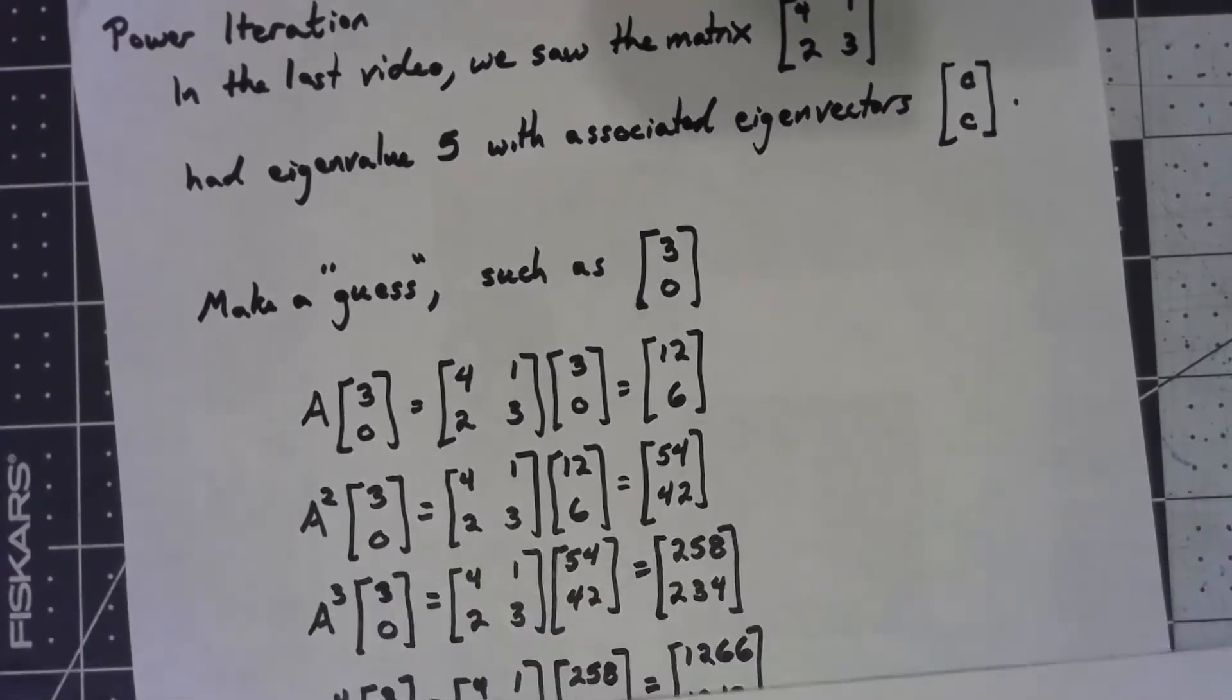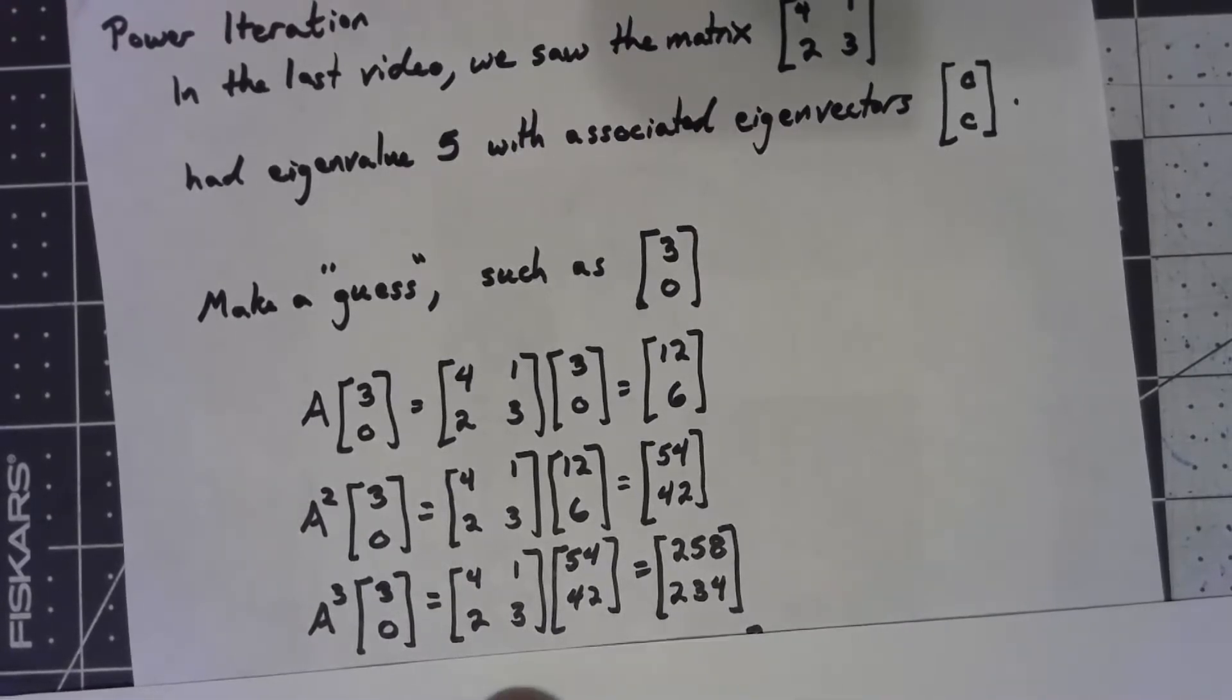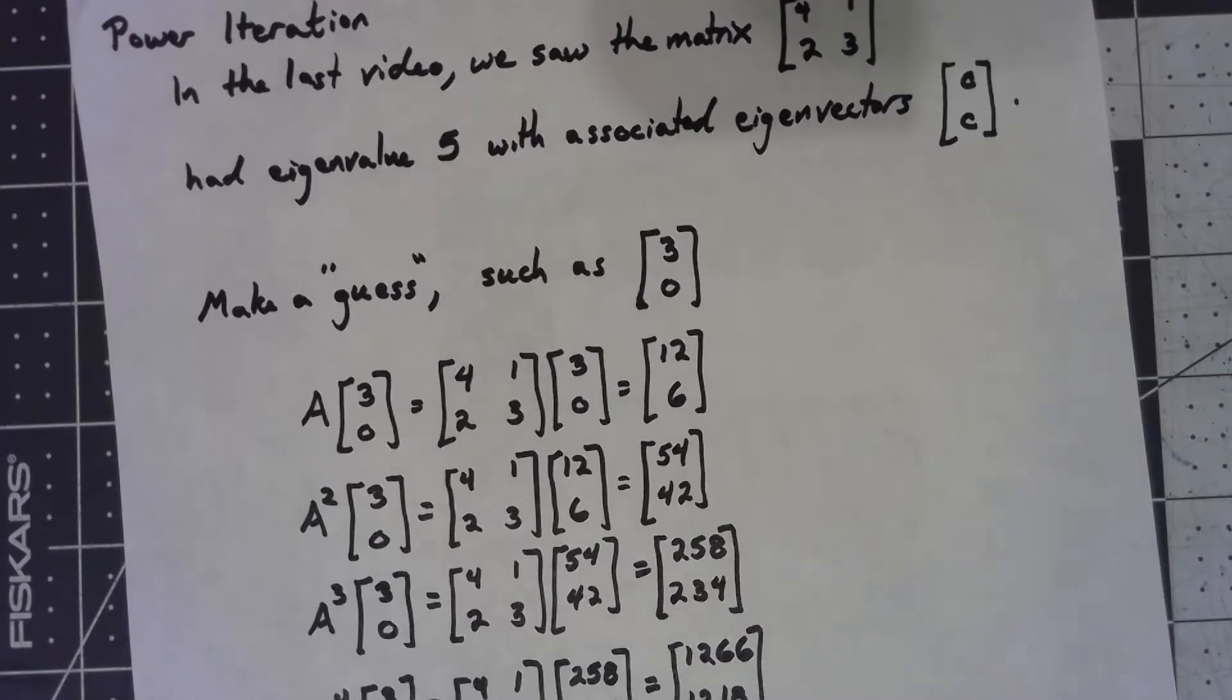Take the matrix times [54, 42], or A cubed times the original, we get [258, 234]. One more time, we get [1266, 1218].